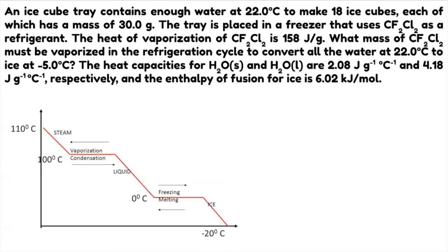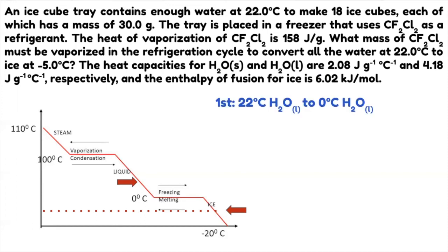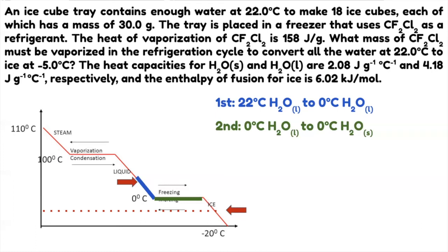This graph is a cooling curve. Now let's identify the steps. We go from negative 5.0 degrees Celsius to 22 degrees Celsius. We're going to have three steps. Step one: from 22 degrees Celsius liquid water to 0 degrees Celsius liquid water. Step two: from 0 degrees Celsius liquid water to 0 degrees Celsius solid water — that's the plateau. Step three: from 0 degree solid water to negative 5 degree solid water.